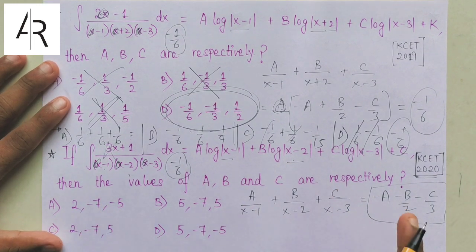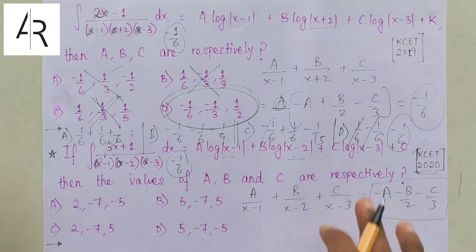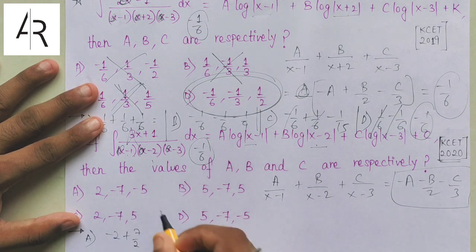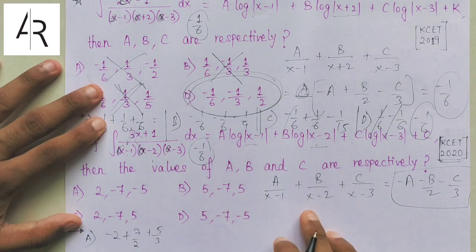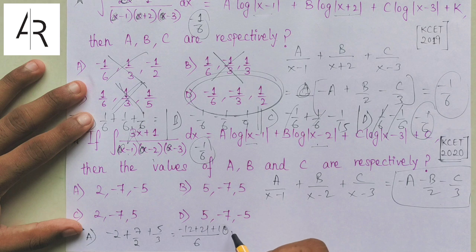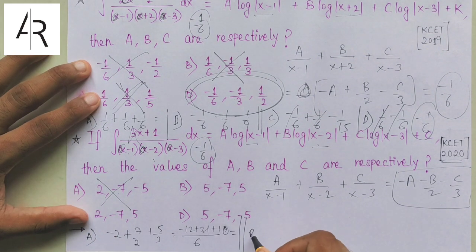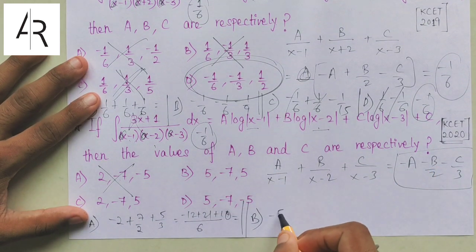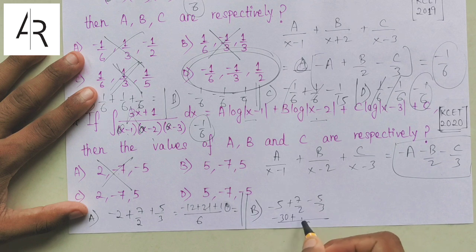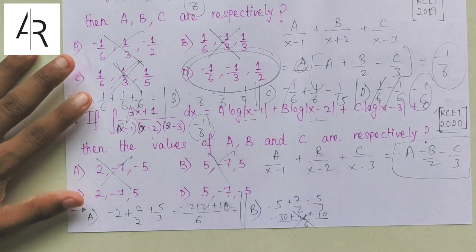Now I will put each option and check which gives −1/6. Checking option A: putting 2 gives −2, then −7 gives +7/2, then −5 gives 5/3. Taking LCM of 6: this is −12 + 21 + 10, which is clearly not equal to −1/6. I can eliminate option A. Checking option B: putting −5 gives +5, then 7/2, then −5/3. Taking LCM of 6: −30 + 21 − 10, again not equal to −1/6. Eliminate option B as well.